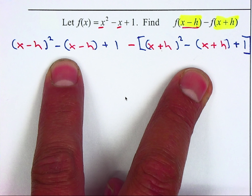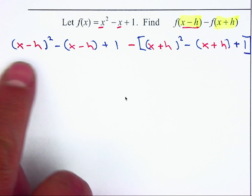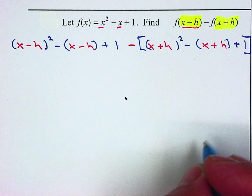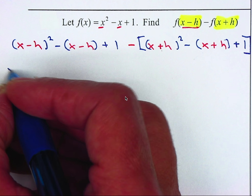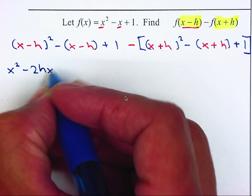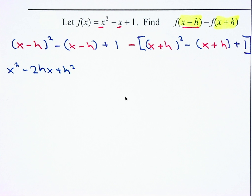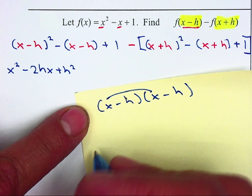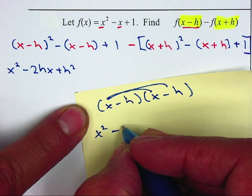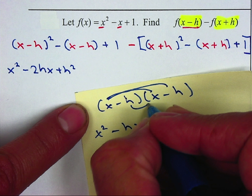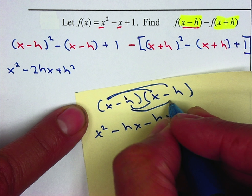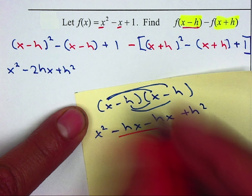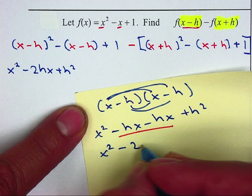Now I can simplify. For x minus h squared, most of you can do this at once: it gives x squared minus 2hx plus h squared. Otherwise, multiply x minus h by x minus h: x squared minus xh minus hx plus h squared, and combining like terms gives x squared minus 2hx plus h squared.